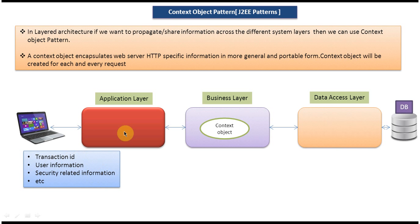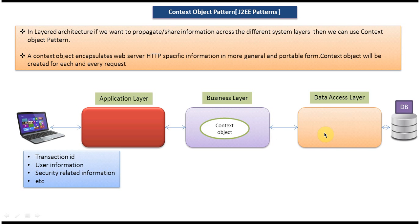The business layer receives the context object and uses it for business calculations. Once done, it passes the context object to the data access layer, which uses its values for database operations. After that, the data access layer passes results back to the business layer, and the business layer passes them back to the application layer. This is how we use the context object — common information shared across multiple layers.